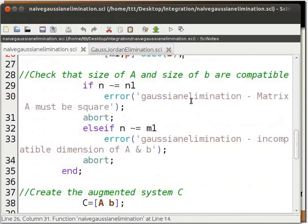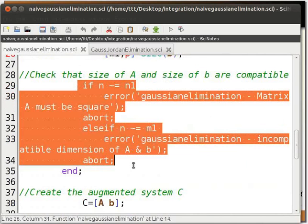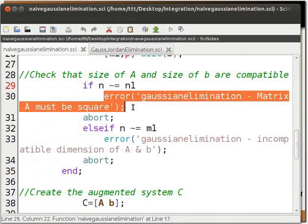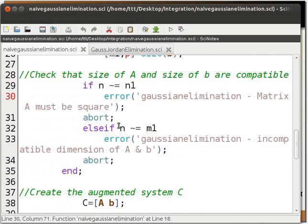Then we have to determine if the matrices are compatible with each other and if a is a square matrix. If n and n1 are not equal, then we display a message that matrix a must be square. If n and m1 are not equal, we display a message incompatible dimension of a and b.